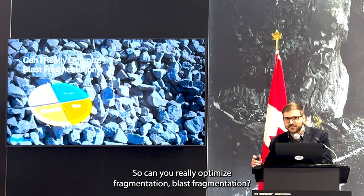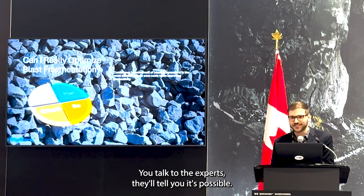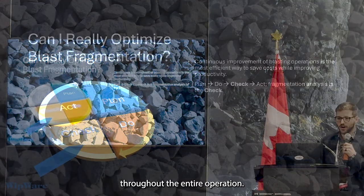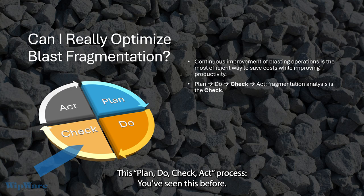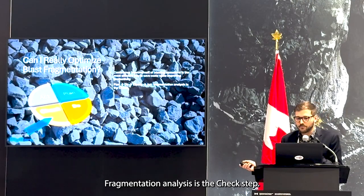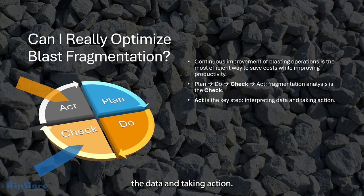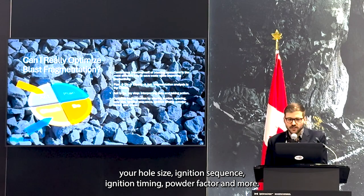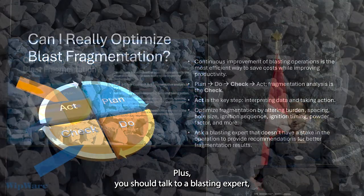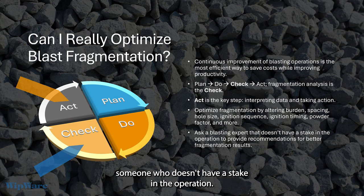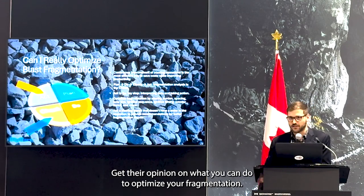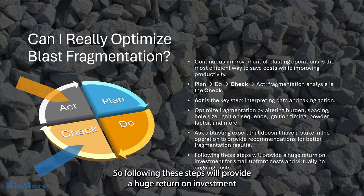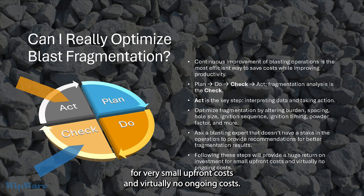So can you really optimize blast fragmentation? Absolutely — some people think it's a myth, but if you talk to the experts, they'll tell you it's possible. Continuous improvement of blasting operations is the most efficient way to save costs while improving productivity throughout the entire operation. Plan, do, check, act — fragmentation analysis is the check step, but ultimately the most important step is the act step: interpreting the data and taking action. You can optimize fragmentation by altering your burden, spacing, hole size, ignition sequence, ignition timing, powder factor, and more. Plus, you should talk to a blasting expert — someone who doesn't have a stake in the operation — and get their opinion. But they're going to need data to work with first. Following these steps will provide a huge return on investment for very small upfront costs and virtually no ongoing costs.